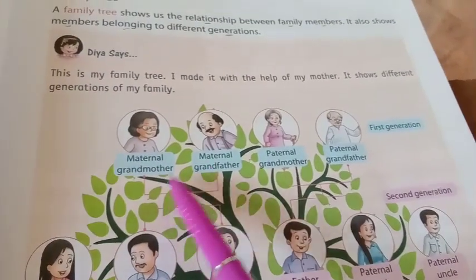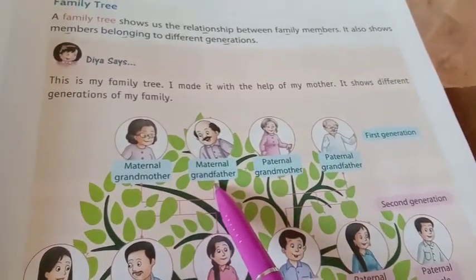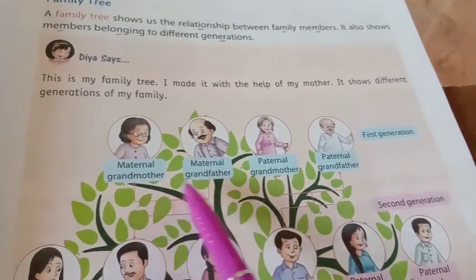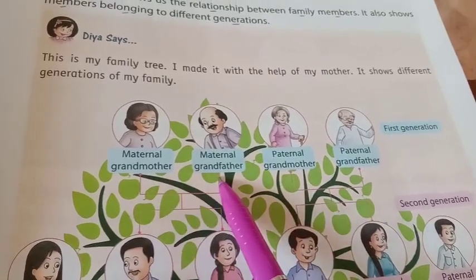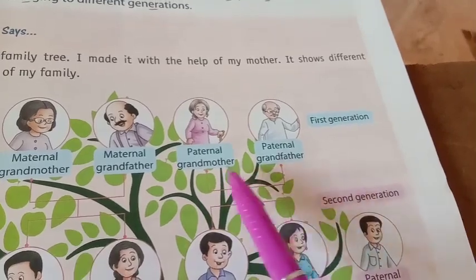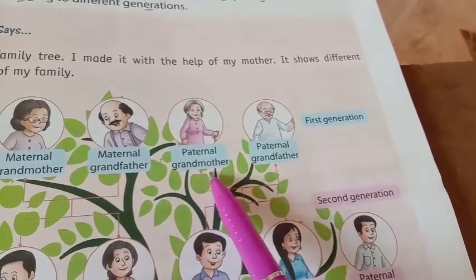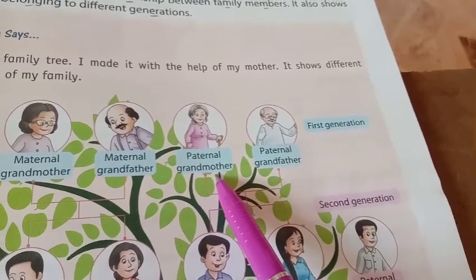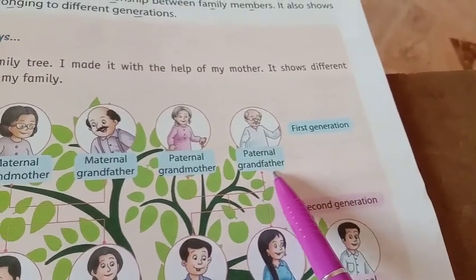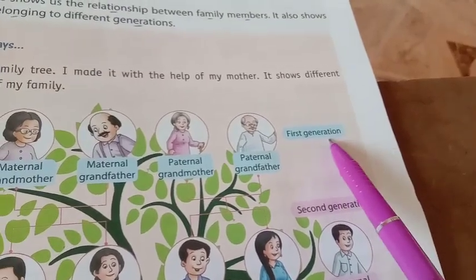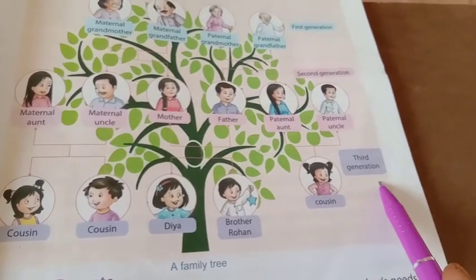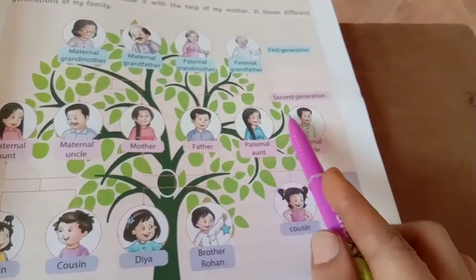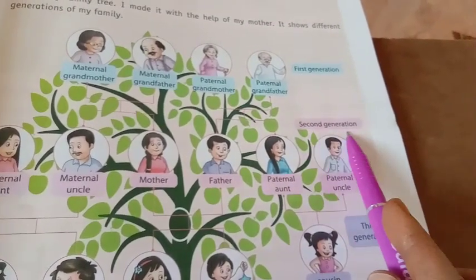Your maternal grandparents are your mother's parents — from your mother's side. Your paternal grandparents are your father's parents. Paternal grandmother means your father's mother and paternal grandfather means your father's father. They are the first generation. You and your cousins and siblings are the third generation. Your parents, uncles, and aunts belong to the second generation.